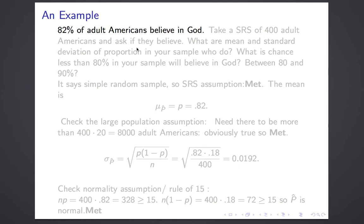So let's see what this looks like in practice. Remember, 82% of adult Americans believe in God. Suppose we take a simple random sample of 400 adult Americans and ask them if they believe in God. What are the mean and standard deviation of the proportion in your sample that believe in God? We'll also find what's the chance that less than 80% believe in God, and what's the chance that between 80% and 90% believe in God.